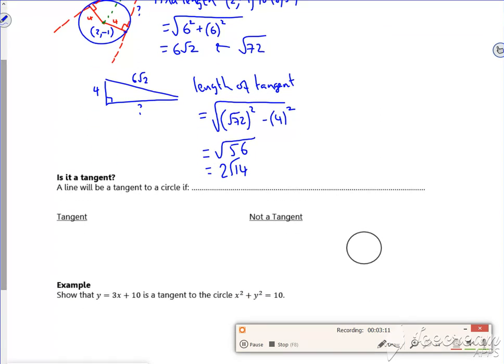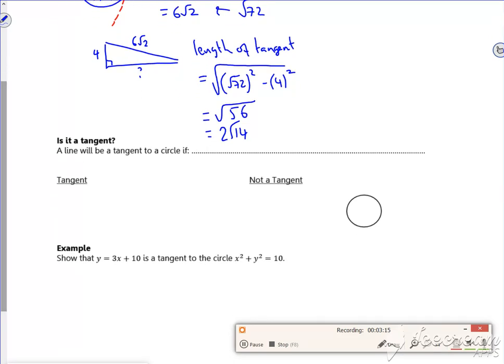So what am I throwing out of the pie in time? So is it a tangent? A line will be a tangent to a circle if it just touches. Now we can link that to the discriminant.